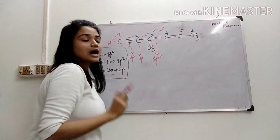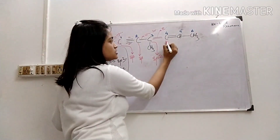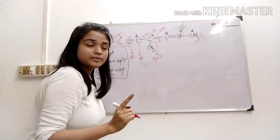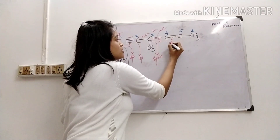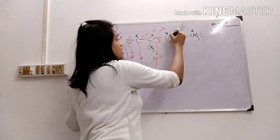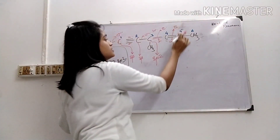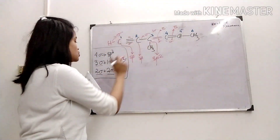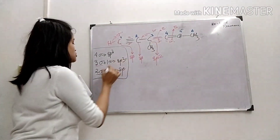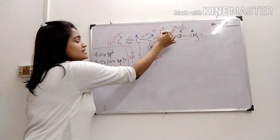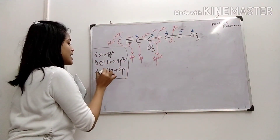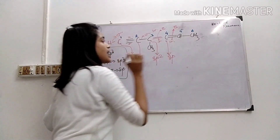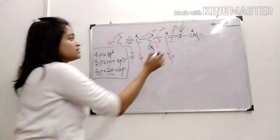The fourth carbon has one sigma bond with the third carbon and one sigma bond with the fifth carbon — that is two sigma bonds. It also has one pi bond with the fifth carbon and one pi bond with the third carbon — that is two pi bonds. So two sigma and two pi means this fourth carbon is sp hybridized.